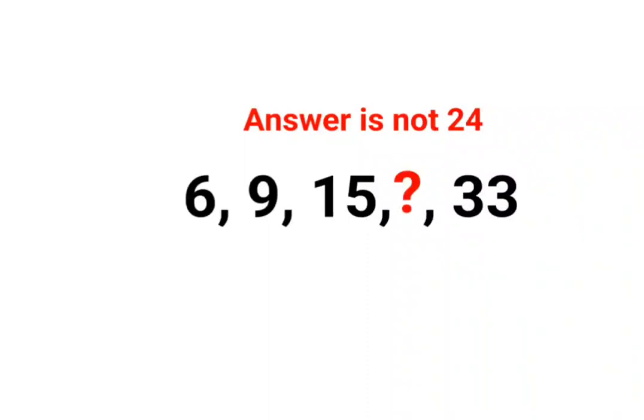Welcome everyone, so today we are going to figure out this pattern. The sequence is 6, 9, 15, and then this is followed by 33. So now what happens over here is, if you see clearly all of these are multiples of 3.